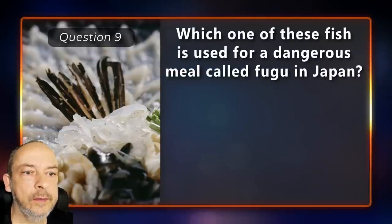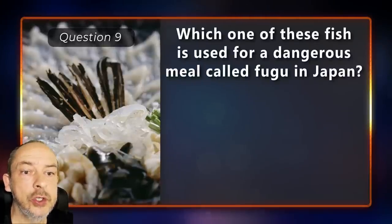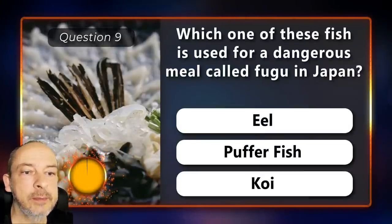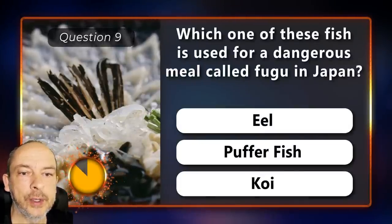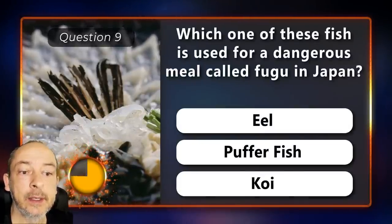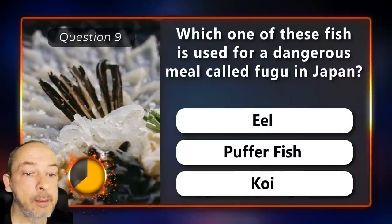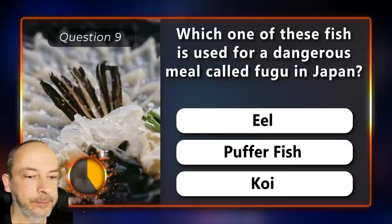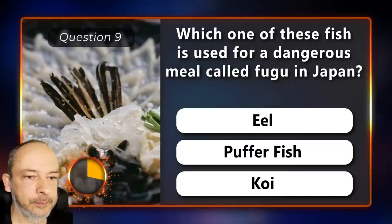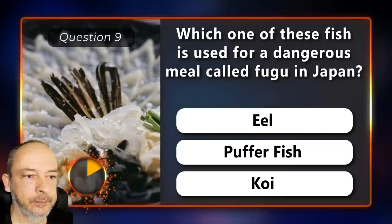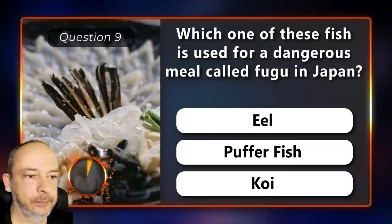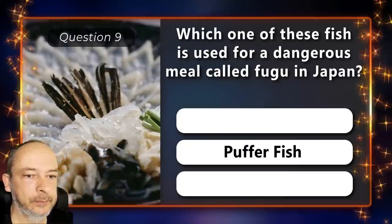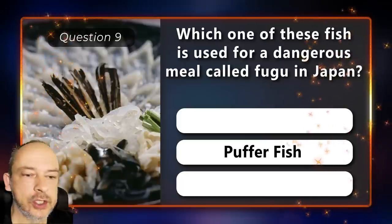Which one of these fish is used for a dangerous meal called fugu in Japan — the eel, puffer fish, or the koi? The puffer fish.